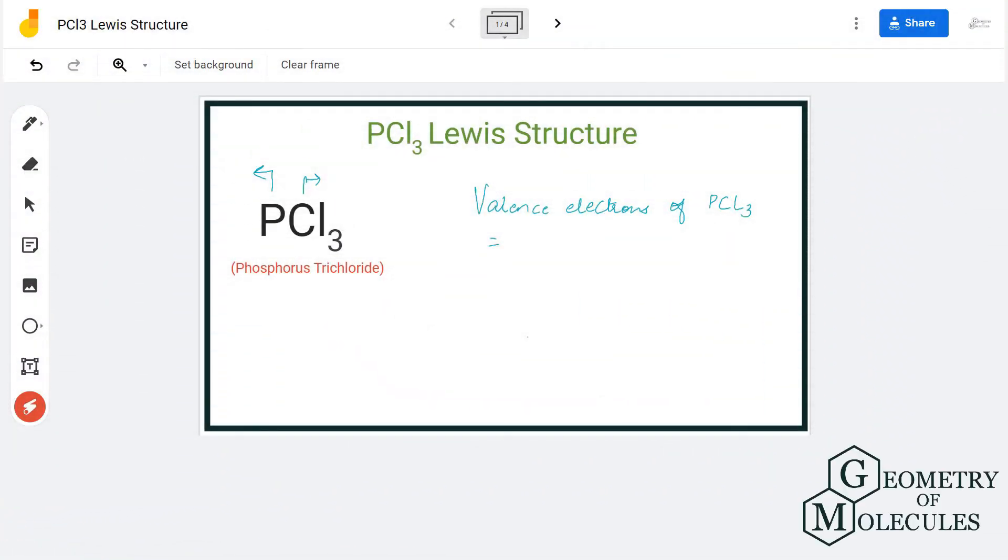Hi guys, today in this video we are going to look at the Lewis structure of PCl3, the chemical formula for phosphorus trichloride. It is made up of one phosphorus atom and three chlorine atoms.